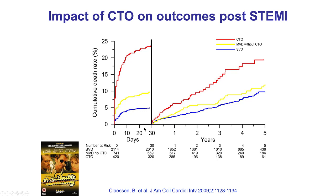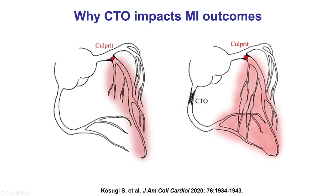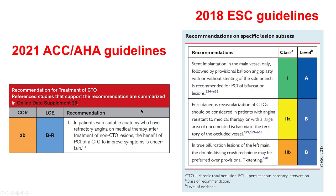We also know that patients who have a CTO have worse outcomes, both short-term and longer-term, when they present with an acute coronary syndrome. This is logical because having a CTO means that if the patient develops an ACS, the extent of ischemia will be much larger than if the patient did not have a CTO. This is reflected in the guidelines — the European guidelines provide a 2A recommendation and the ACC/AHA guidelines a 2B recommendation for symptomatic improvement.